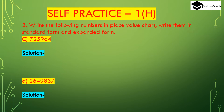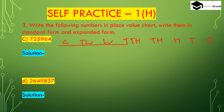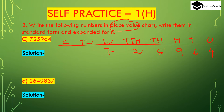Question number 3: Write the following numbers in a place value chart, standard form, and expanded form. First number: 7,20,25,964. Representing in the place value chart — crores, ten-lakhs, lakhs, ten-thousands, thousands, hundreds, tens, ones — we get: 7 crore, 2 ten-lakhs, 0 lakhs, 2 ten-thousands, 5 thousands, 9 hundreds, 6 tens, 4 ones.